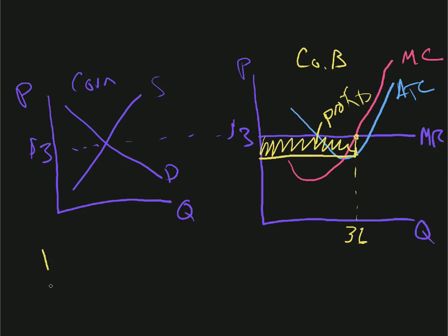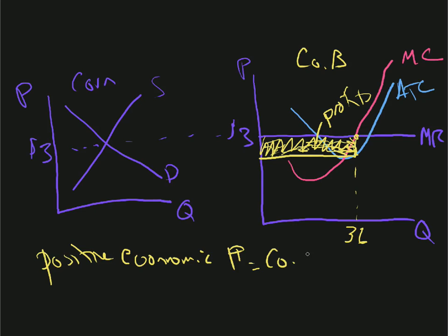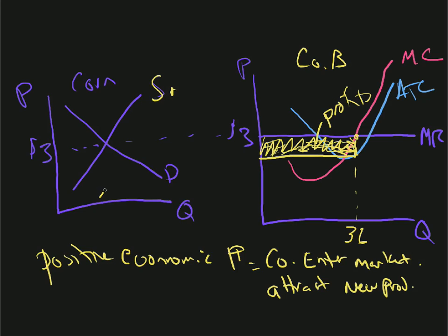What happens with positive or excess economic profits? Something's going to happen. Companies are going to look at this — they're growing wheat or making soybeans — and they're going to say, look at that, this company's making profits growing corn. I know what I'm going to do: I'm going to enter the market. So we get companies or farmers entering the market. In the short run, this company's making a profit, but these profits attract new producers. When new producers come into the market, this supply curve is no longer valid — we have to draw a new supply curve.